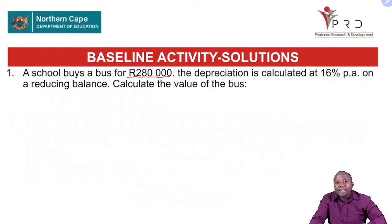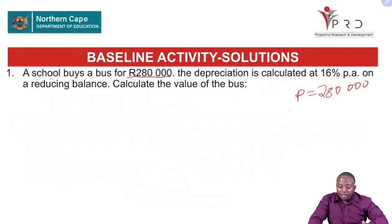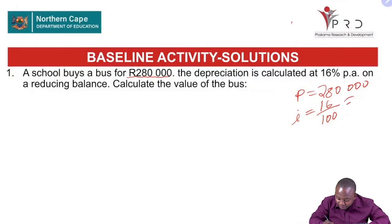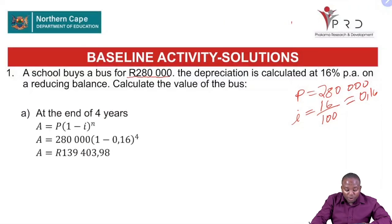They say the school buys a bus for 280,000 — so you purchase the bus currently. This becomes your present value: P equals 280,000. The depreciation is calculated at 16% per annum, so we are given the rate of depreciation. We convert the rate into i: 16 divided by 100 gives us i equals 0.16. We are working on a reducing balance, so we use the reducing balance formula: A equals P(1 minus i) raised to the power n.